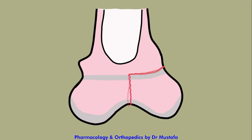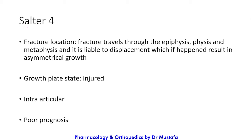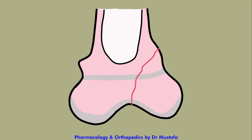Grade 4 is a fracture that travels through the epiphysis, physis, and metaphysis. It is liable to displacement, which if it occurs results in asymmetrical growth. The growth plate is injured and the fracture is intra-articular with poor prognosis. The growth plate is crossed, similar to Grade 3, and may lead to asymmetrical growth.